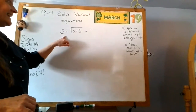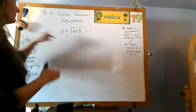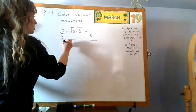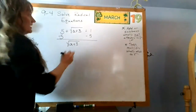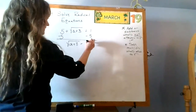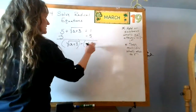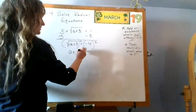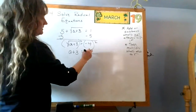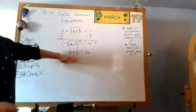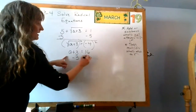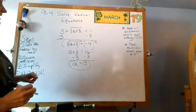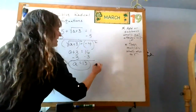Square root of a plus three equals one. Again, how do I get it by itself? I add or subtract first — subtract the five: five minus five is zero, equals one minus five, which is negative four. Now what am I going to do to both sides? Square it — I've got the radical all by itself now. Squaring gives me a plus three equals negative four times negative four, which is positive sixteen.